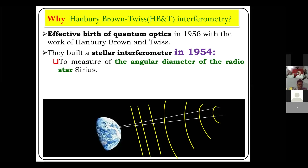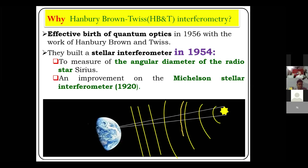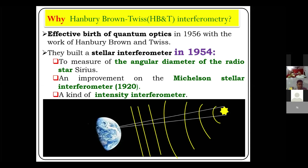Hanbury Brown and Twiss were engaged in designing a stellar radio interferometer to measure the diameter of a distant radio star, and they made a kind of interferometer in 1954. This interferometer was an improvement over the previous stellar interferometer made by Michelson, but it was different in that it was an intensity interferometer, whereas Michelson's interferometer was a phase interferometer.